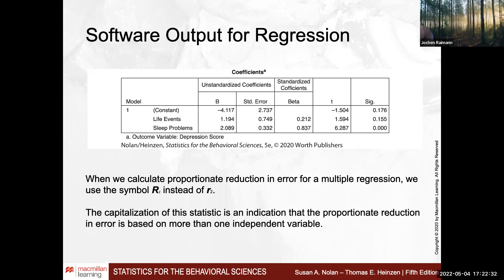We have significant predictors here. We had a significant prediction of life events predicting depression score. Now we include sleep problems — this essentially kicks out the significance of life events and makes sleep disturbance more important as a predictor of depression. So that is the interpretation: by observing your P-values in multiple regression output.